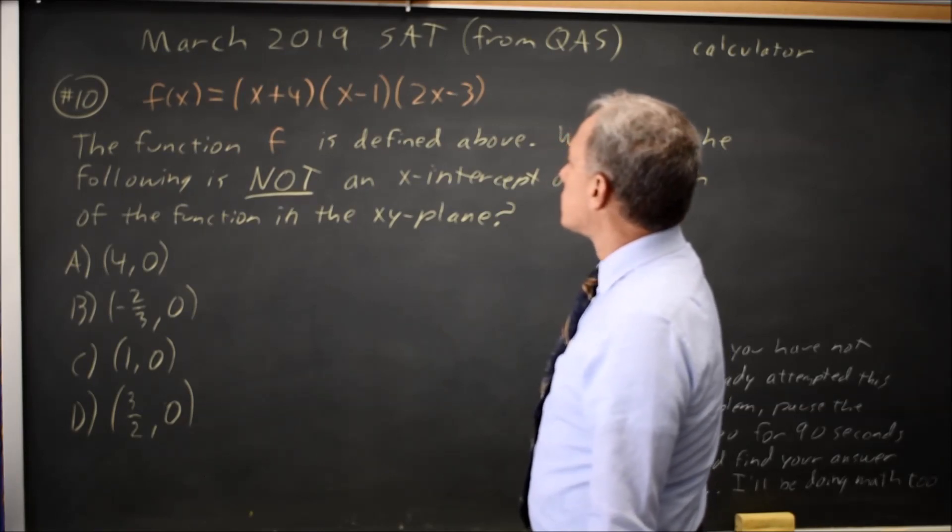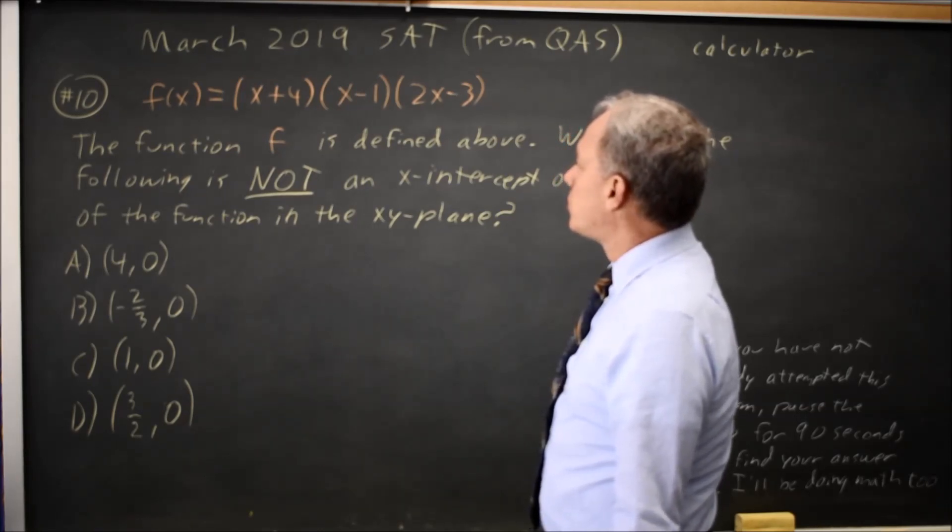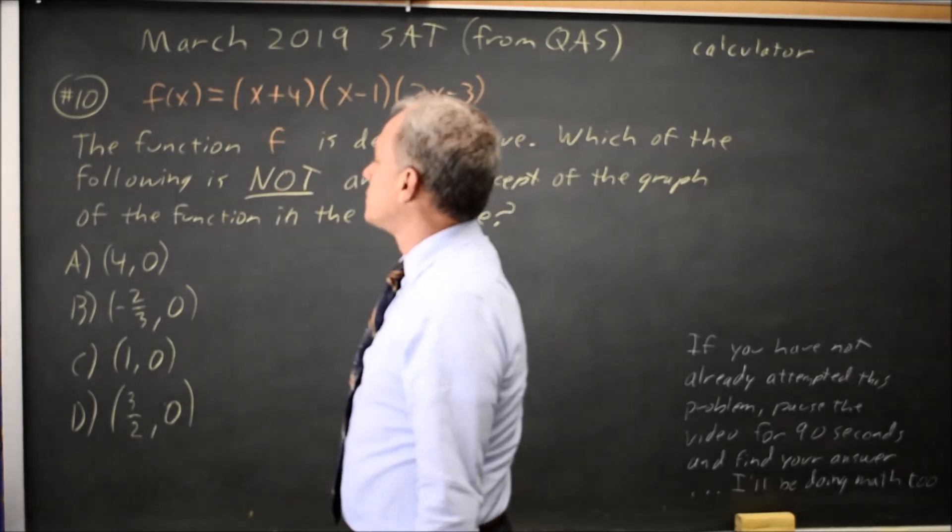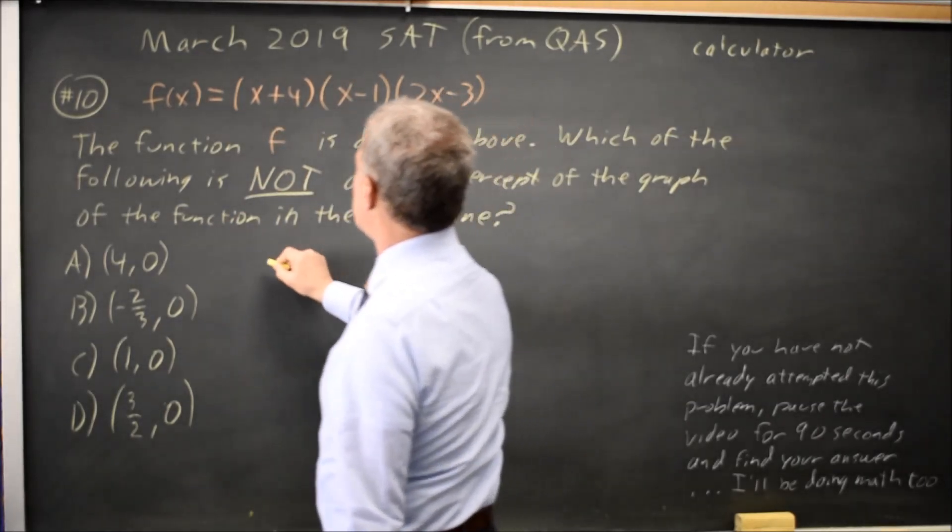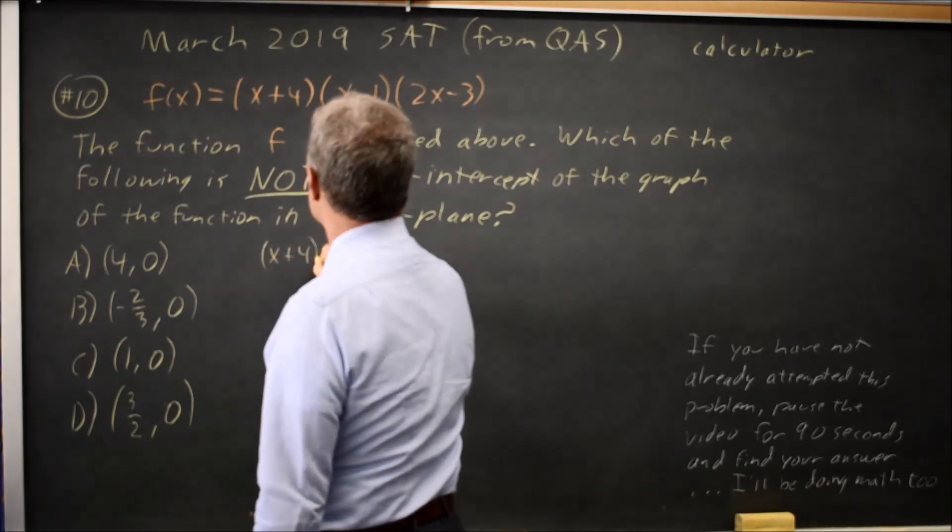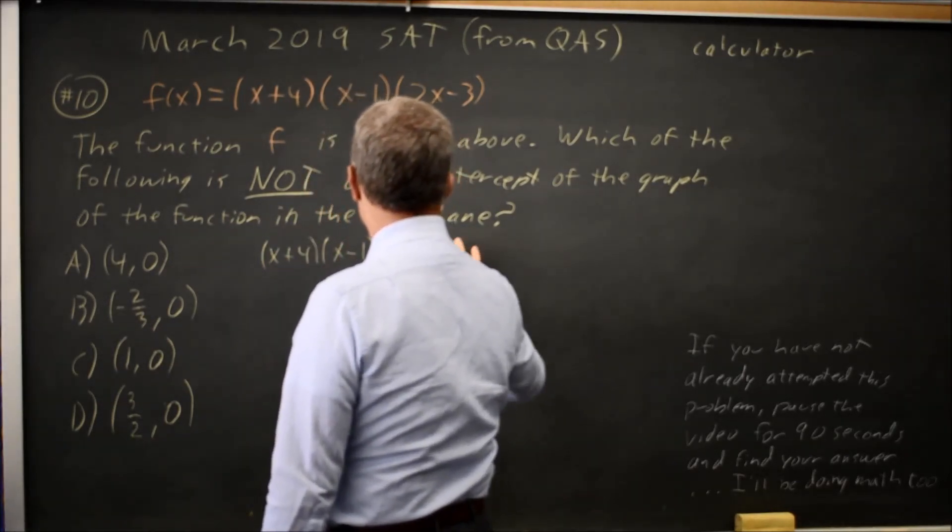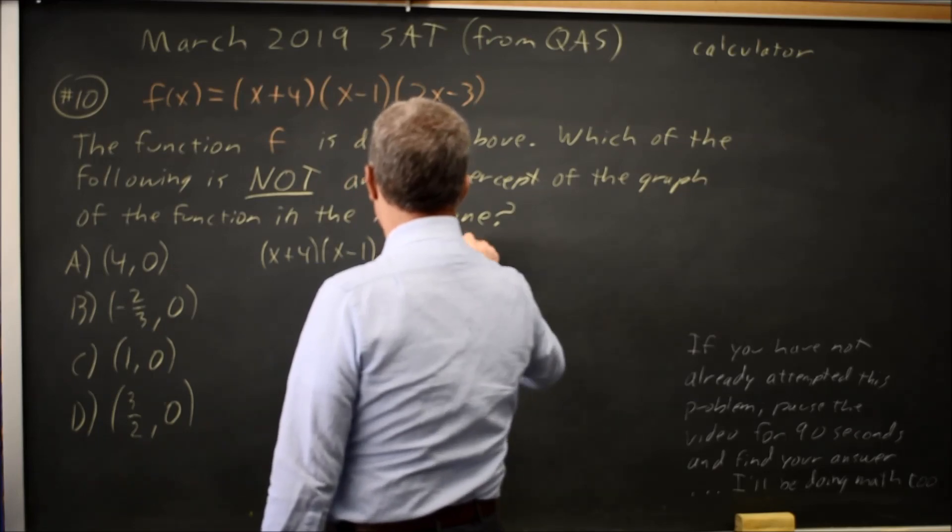The x-intercepts or zeros are the points where the y-value of the function is zero. So if I write (x+4)(x-1)(2x-3) equals zero.